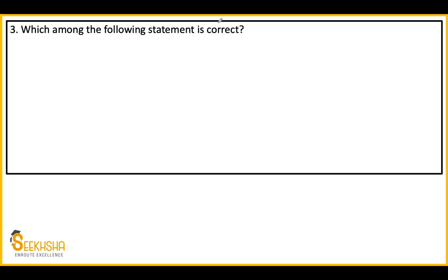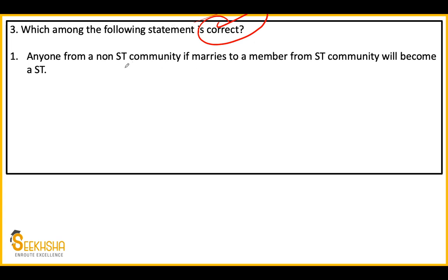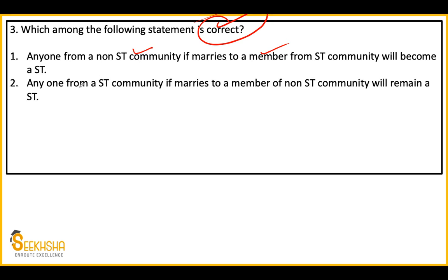Third question: Which among the following statements is correct? Statement 1: Anyone from a non-ST community, if they marry a member from an ST community, will become an ST. Statement 2: Anyone from an ST community, if he or she marries a person from a non-ST community, will come out of ST community and enter the general community. These types of questions are not commonly found - I had to research a lot to make them.